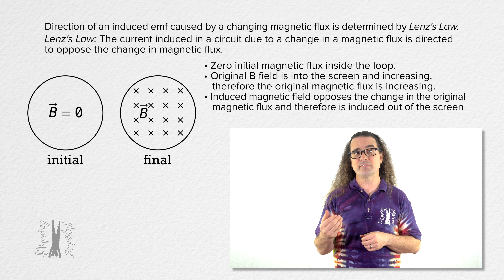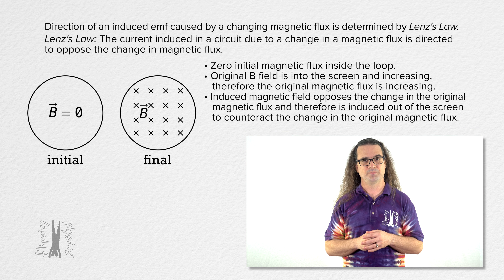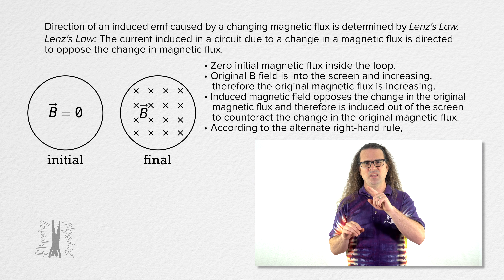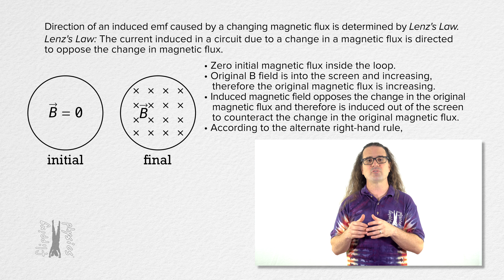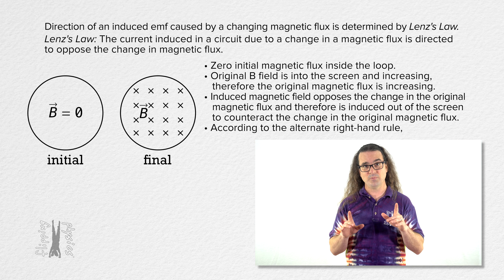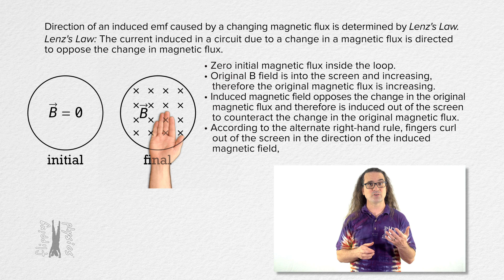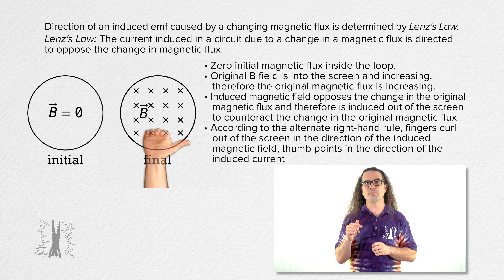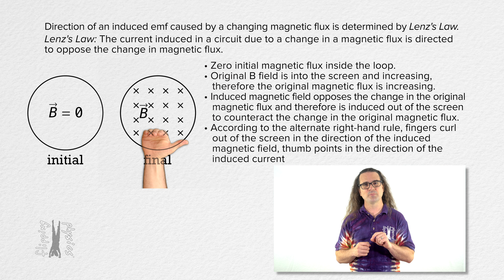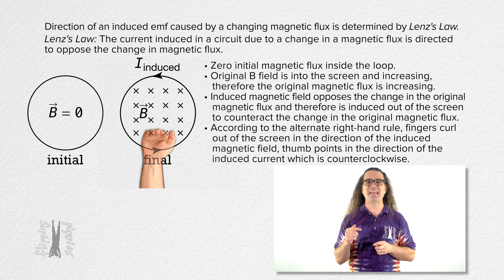The induced magnetic field is out of the screen because, according to Lenz's law, it is counteracting the change in the original magnetic flux which is increasing. According to the alternate right hand rule, the thumb points in the direction of the induced current in the wire and the fingers curl in the direction of the induced magnetic field created by the induced current in the wire. So the fingers of the right hand curl in the direction of the induced magnetic field which is out of the screen in the wire loop, and the thumb points in the direction of the induced current in the loop — which makes the induced current in the loop counterclockwise from this perspective. The induced magnetic field is out of the screen, caused by an induced current in the wire loop which is counterclockwise from this perspective.